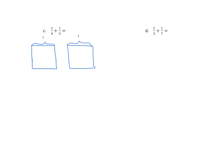Now we're going to represent each one of these fractions. The first addend is one-fourth, so I'm going to use three vertical lines to partition this into four equal parts. And the numerator is one, so I'm going to shade one of those four parts.